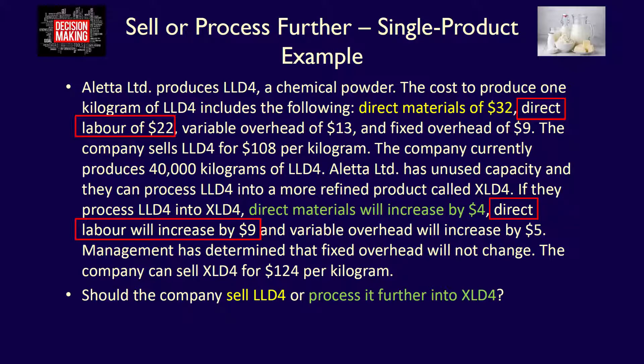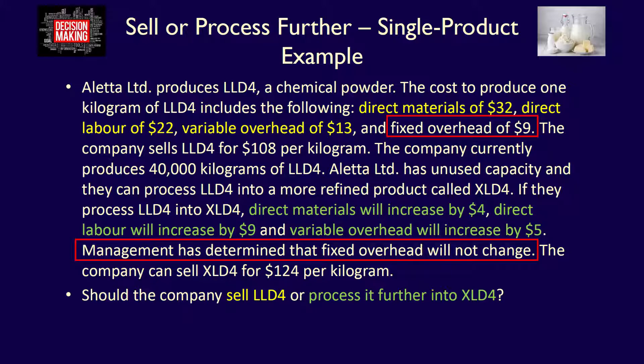LLD4 direct labor is $22 per kilogram; XLD4 is $9 more, so $31 per kilogram — changing between alternatives and a future cost, so both are relevant. Variable overhead is $13 per kilogram for LLD4 and $5 more for XLD4, making it $18 per kilogram. Both change between alternatives and are future costs, so both are relevant.